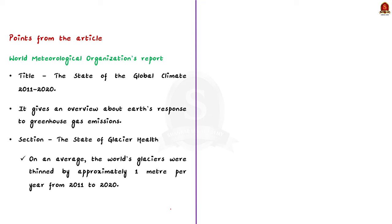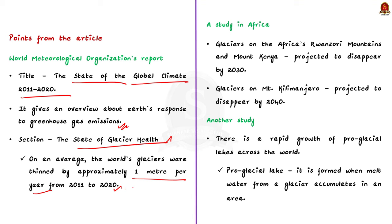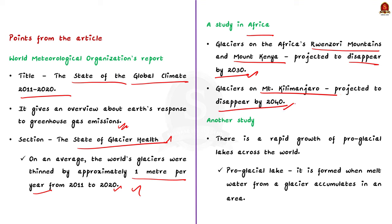Recently, the World Meteorological Organization released a report titled 'The State of Global Climate 2011–2020.' This report gives an overview of Earth's response to greenhouse gas emissions and contains a section called 'The State of Glacier Health.' The report points out that on an average, the world's glaciers were thinning by approximately one meter per year from 2011 to 2020. Studies in Africa show that glaciers on Rwenzori Mountain and Mount Kenya are projected to disappear by 2030, and those on Mount Kilimanjaro by 2040.